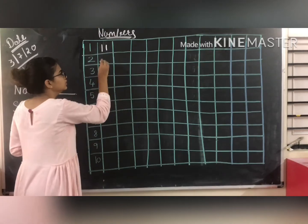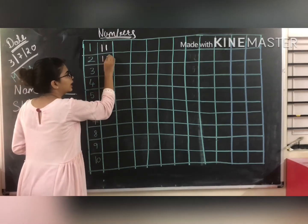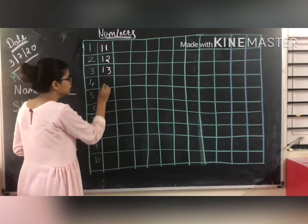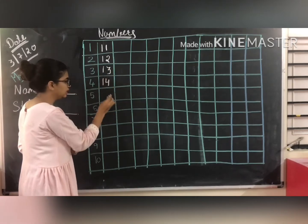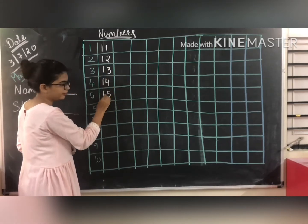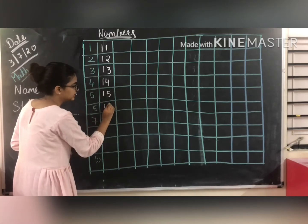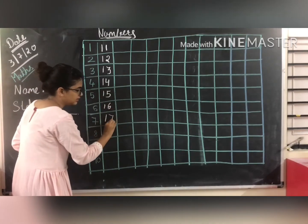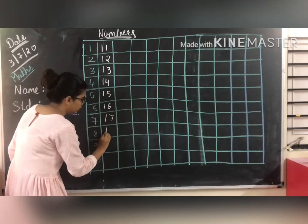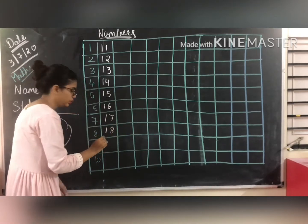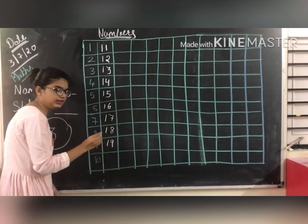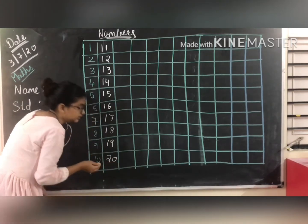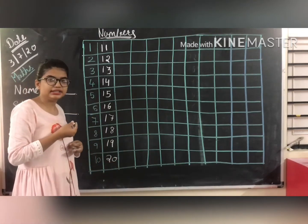11, 12, 13, 14, 15, 16, 17, 18, 19, and 20. This is — we have already learned it. Okay?